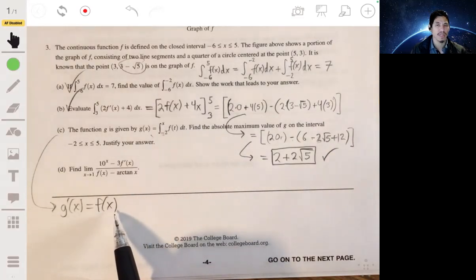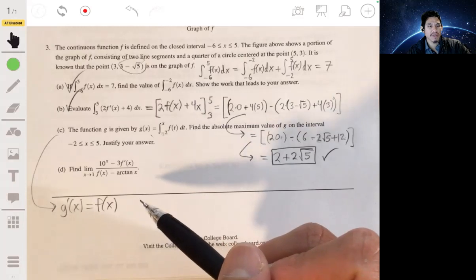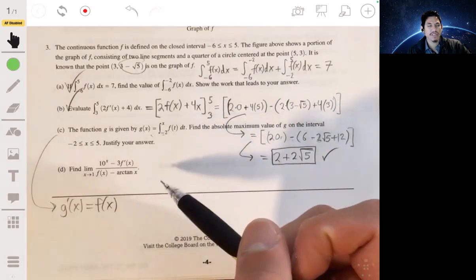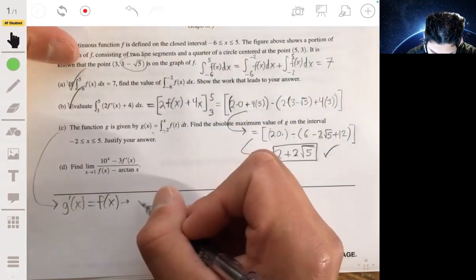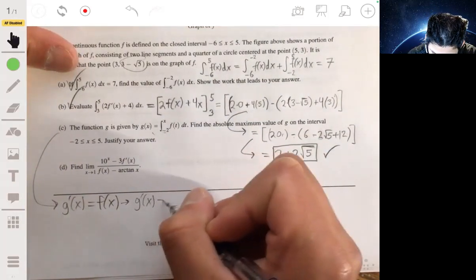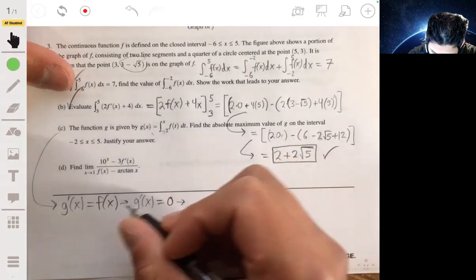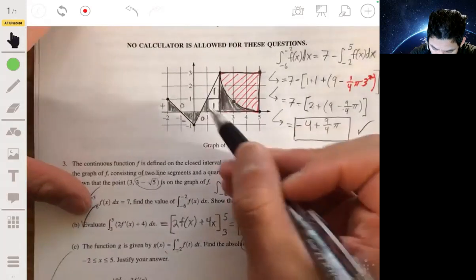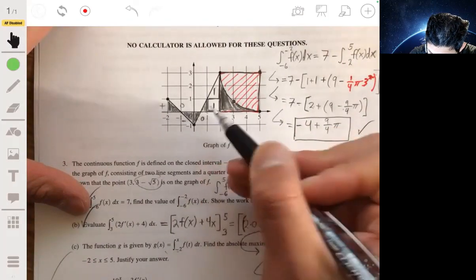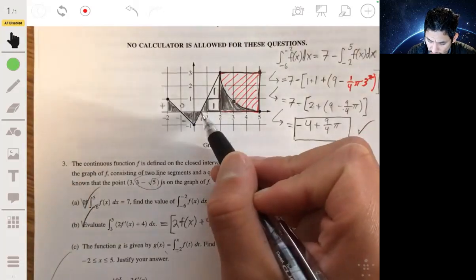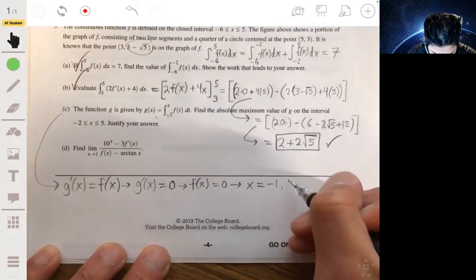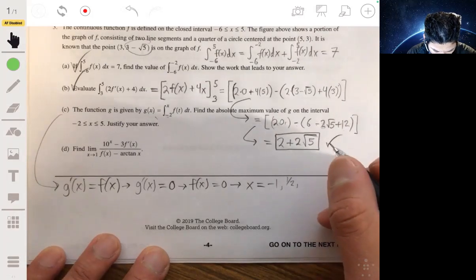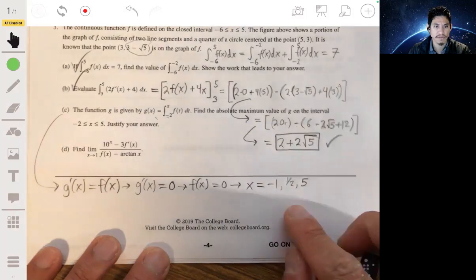Now, if you remember from the chapter where you're studying maximums and minimums and extreme values, to find absolute maximums or minimums, you want to study the derivatives and find the critical values. You want to find where g'(x) would be 0 or undefined, or in other words, where f(x) would be 0. So we just look at the graph, literally, where f(x) would be 0. That would be negative 1, and 1/2, and 5.